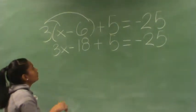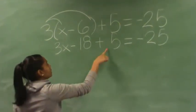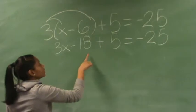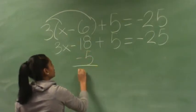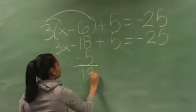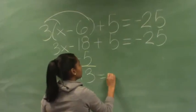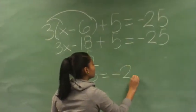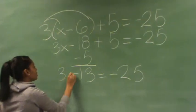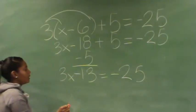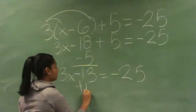From that, you combine the like terms, so you bring down the positive 5 to the negative 18, which gives you negative 13, and then you add 13 to both sides.